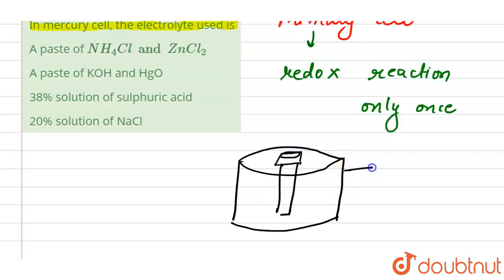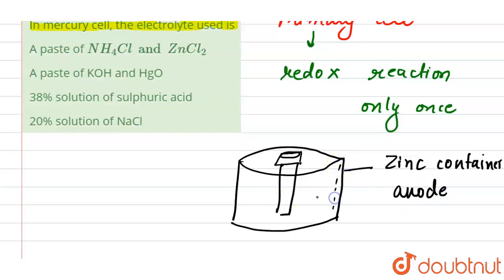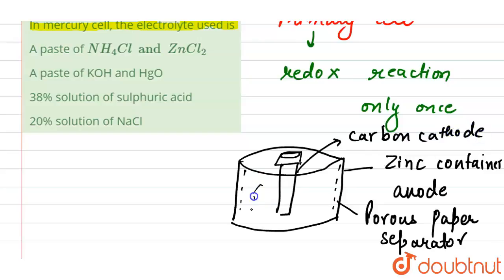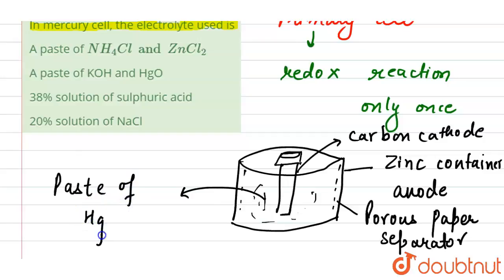In the descriptive diagram of the mercury cell, we have the zinc container, which acts as the anode. We also have a porous paper which works as the separator. This is the carbon cathode. In this part, we have the paste of HgO and KOH.